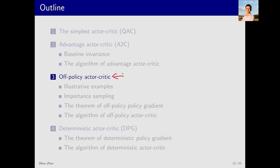Now let's move to the third part: off-policy actor-critic. So far, the actor-critic and policy gradient algorithms we have discussed are all on-policy. What if we have some experience samples and want to make use of them? In that case we can use the off-policy actor-critic algorithm. Before introducing the algorithm, I must introduce an important technique called importance sampling, which can be used to transform an on-policy algorithm into an off-policy one.